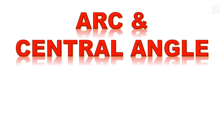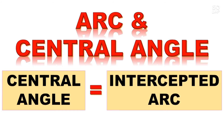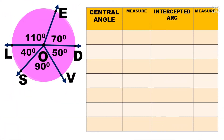Now let's look at the relationship between arc and central angle. The central angle is equal to its intercepted arc — meaning whatever the measure of the central angle is, that is also the measure of the intercepted arc. We have a table with four columns: the central angle, the measure of the central angle, the intercepted arc, and the measure of the intercepted arc.